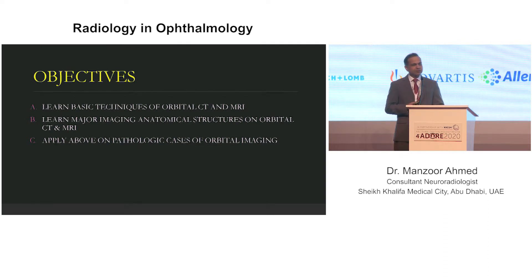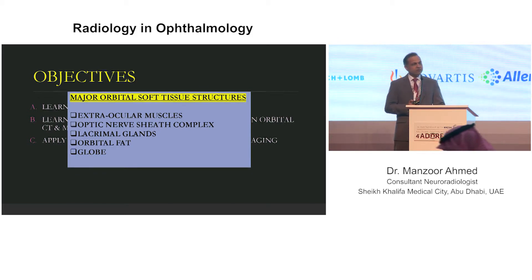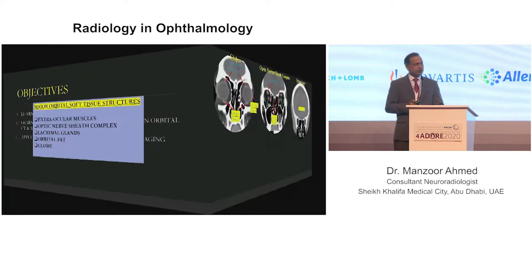Dr. Allen covered a lot of pathologies which I cannot cover, so that would supplement this. There are five important structures to think about in CT and orbital imaging: extraocular muscles, optic nerve sheath complex, lacrimal glands, and orbital fat. People talk about intraconal and extraconal spaces, but these are the structures you have to pay attention to. Sometimes we look at the globe for certain pathologies, but the first four are more important.